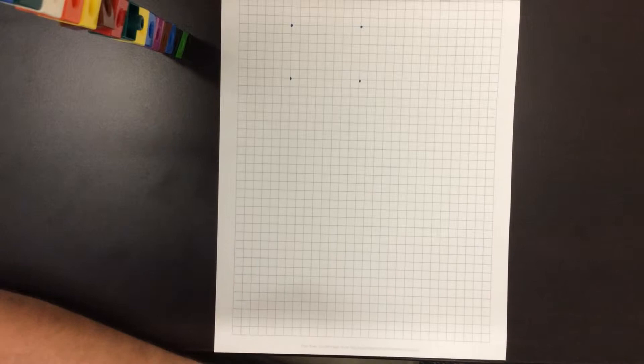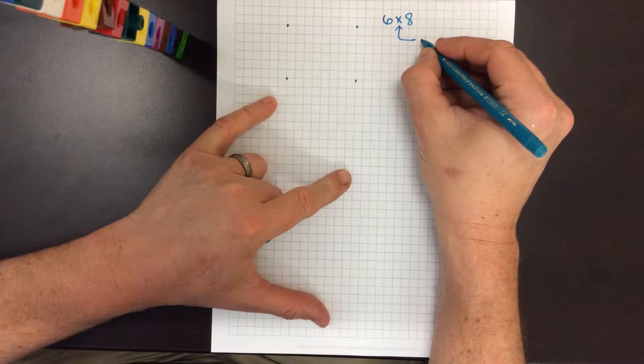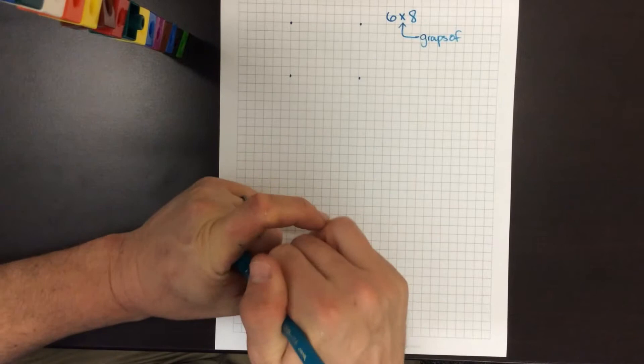When we get started in third grade we'd have problems like six times eight, and one of the things that we want kids to understand is that that multiplication sign has meaning—it means groups of. Students are asked to create models or what we call arrays in order to represent this multiplication fact.